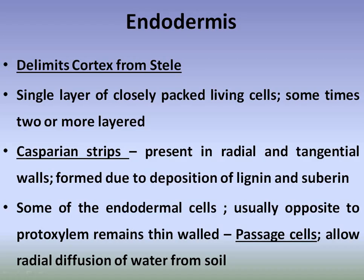The Endodermis is the layer that separates the cortex from the stele. It is composed of closely packed living cells in a single layer. Sometimes the endodermis can have specialized characteristics. The main character of the endodermis involves thickenings on the radial or tangential walls.